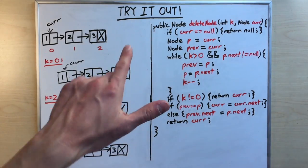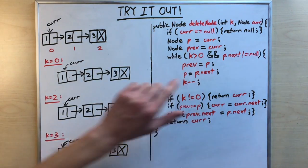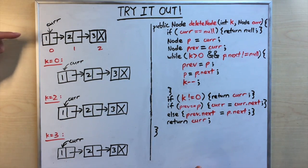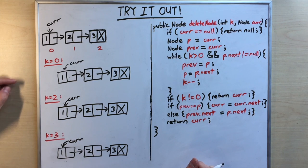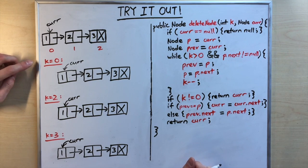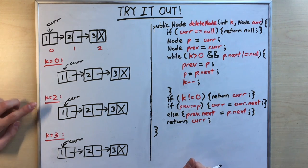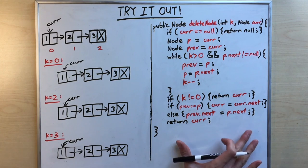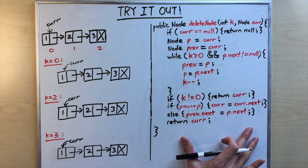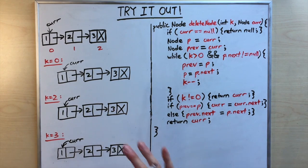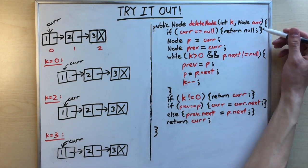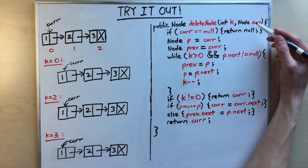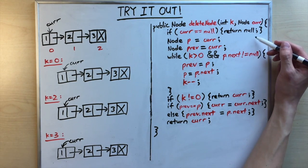We'll test three cases on a three-node linked list: deleting at k equals zero, k equals two, and k equals three. Let's walk through each one using our code.